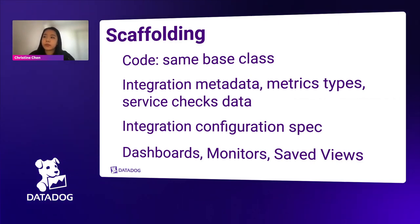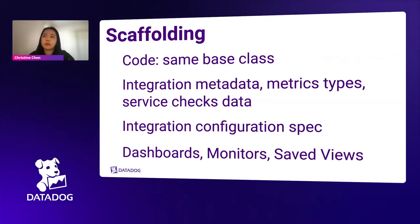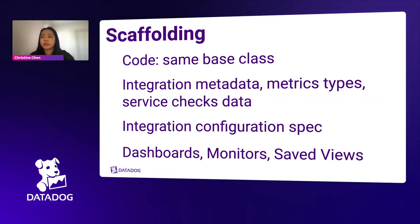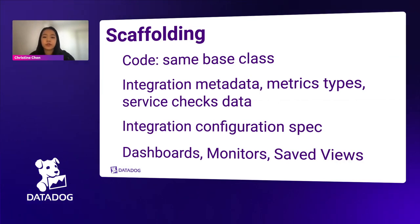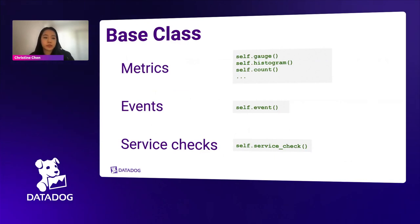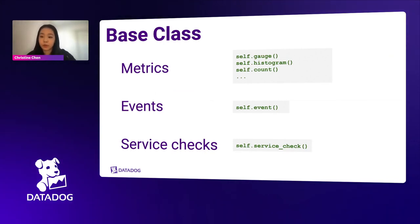We maintain service checks data that describes the service check made by the integration and provides the conditions for the check statuses. The integration configuration spec is what we use to standardize — we use templates to standardize configuration options for all our integrations so they're consistently named. The assets we support, like dashboards, monitors, and saved views, are also hosted in integrations core or integrations extras.